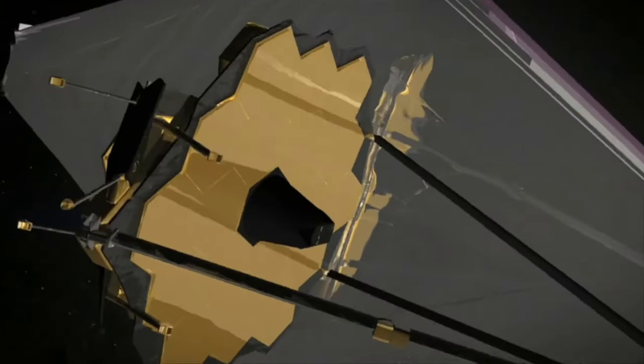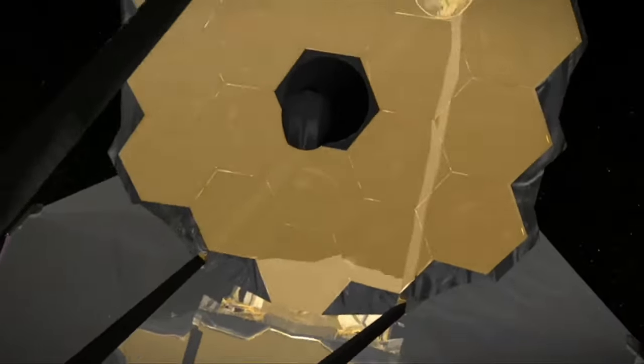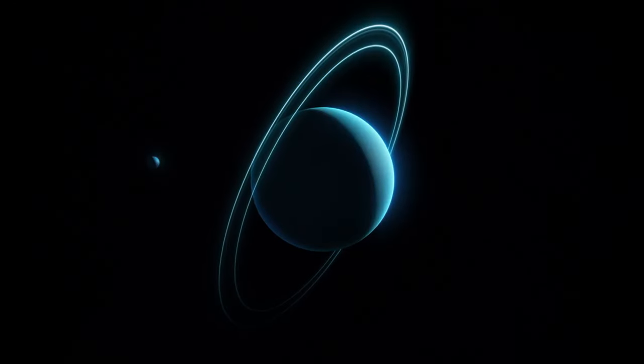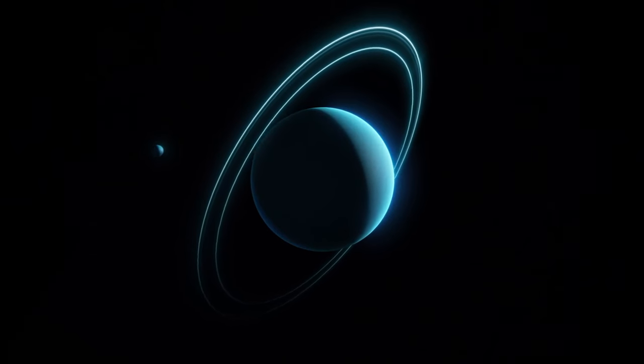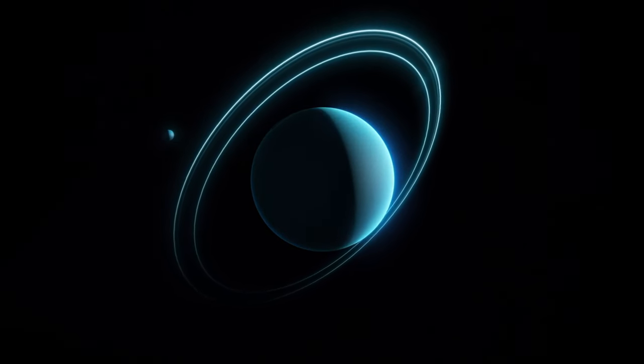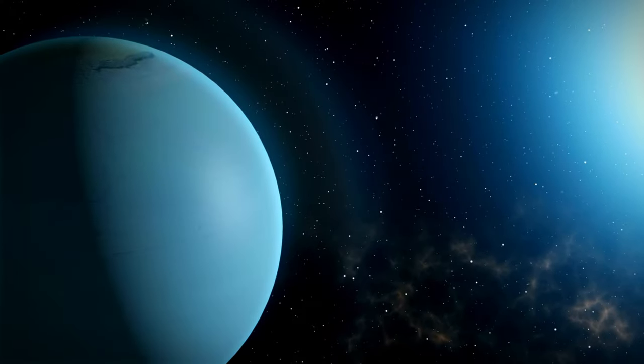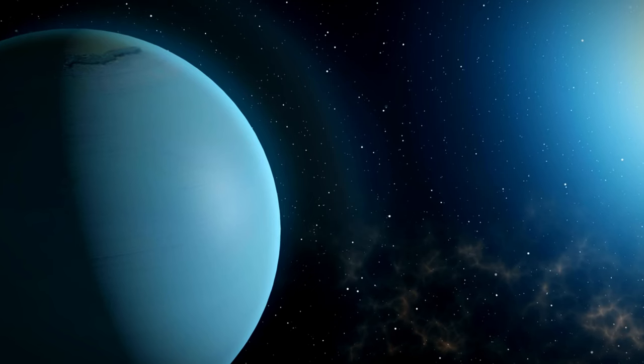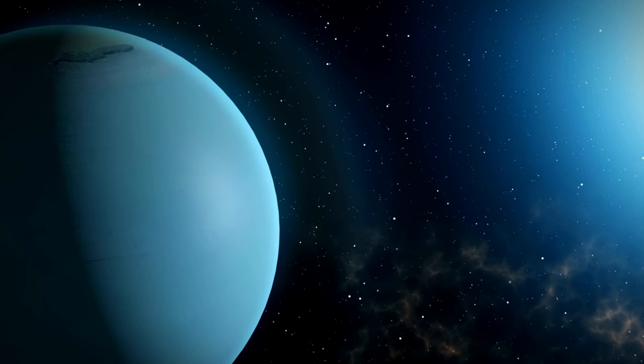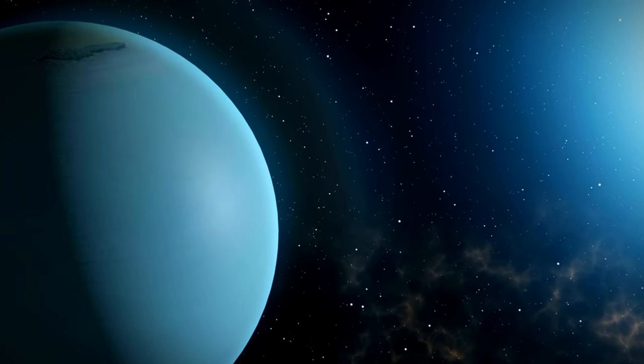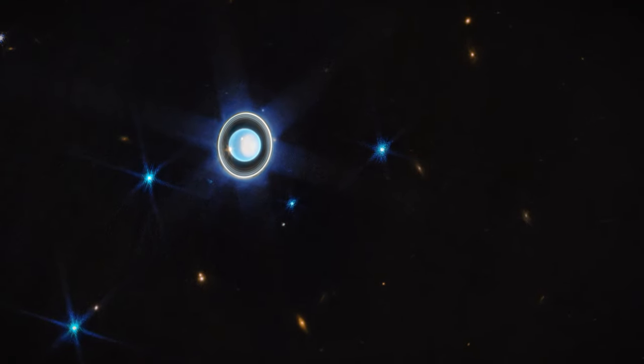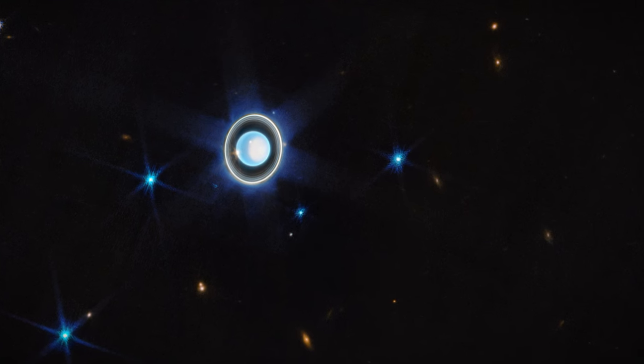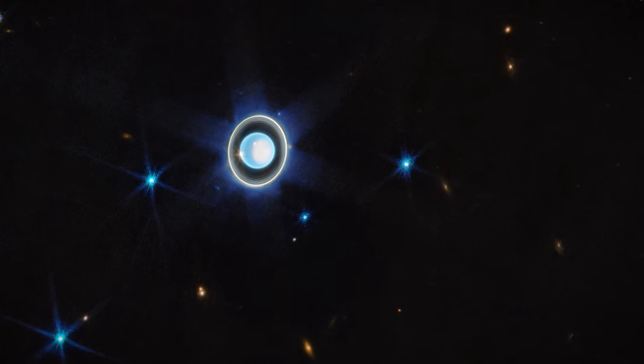The James Webb Space Telescope (JWST) has given us a rare and stunning new perspective on Uranus, a planet often overshadowed by its more flamboyant neighbors in the solar system. Traditionally, Uranus has been a challenging subject for observation due to its distance and the subtlety of its ring system when viewed in visible light. However, JWST's capabilities in the infrared spectrum have uncovered a world of intricate details that were previously obscured.